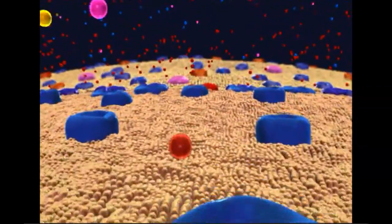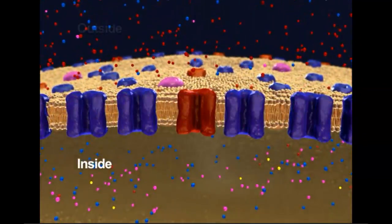A neuron, like every other cell, has positively and negatively charged ions inside and outside.